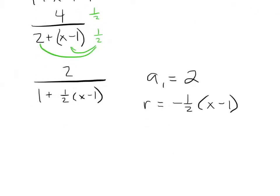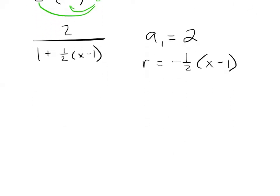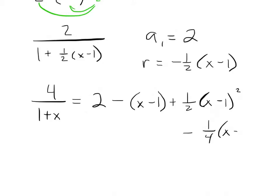So the final step in this process is that I say, 4 over 1 plus x is apparently equal to, the first term is 2. Now each time I'm supposed to be multiplying by this common ratio, so I multiply a negative of 1 half, and by x minus 1, so I'm going to get minus 1(x-1) plus 1 half (x-1) squared minus 1 fourth (x-1) cubed, and so on.